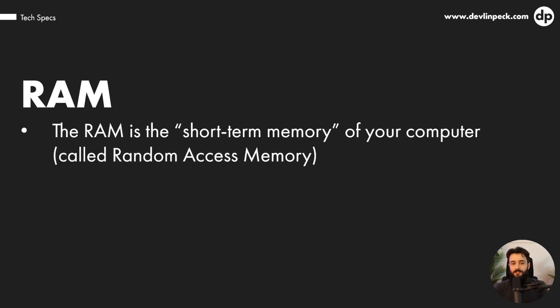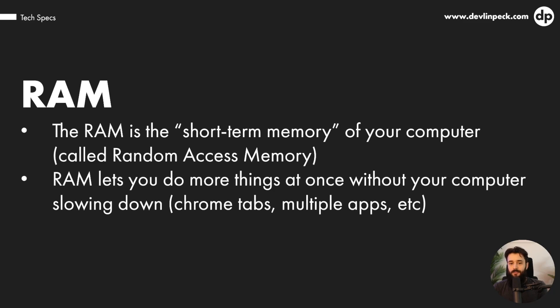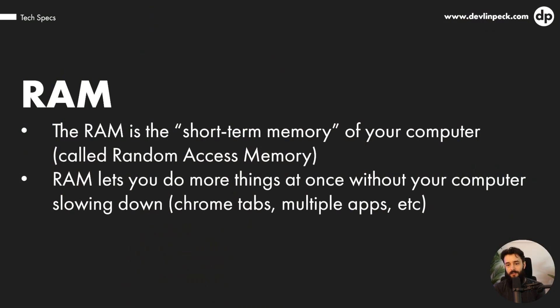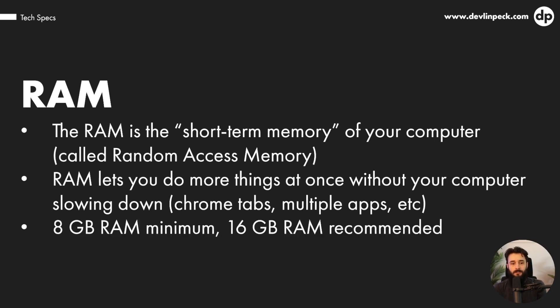Now let's move on to RAM — random access memory. This is essentially the short-term memory of your computer. It lets you do more things at once without your computer slowing down. So if you want to have 20 Chrome tabs open, Articulate Storyline and Adobe Illustrator running, maybe even a video editor as well — you can do all of that with a lot of RAM and they'll all run just as quickly. Eight gigabytes of RAM is the absolute minimum, but I'd highly recommend going for 16 gigabytes if possible. You can get by with 8GB, but if you really don't want to worry about it, 16 gigabytes or beyond is a pretty safe way to go.